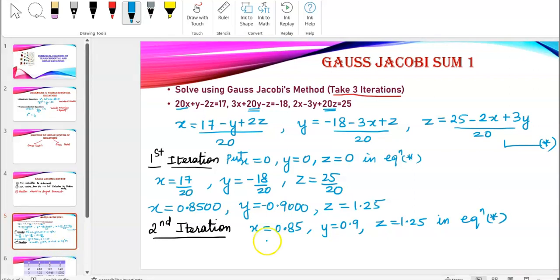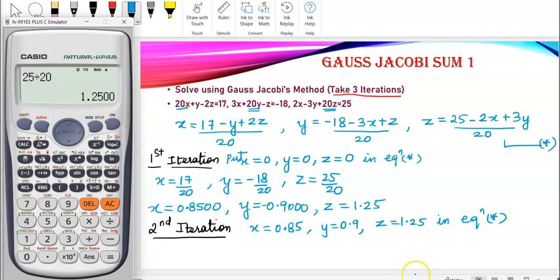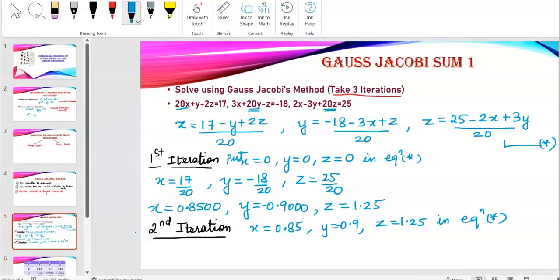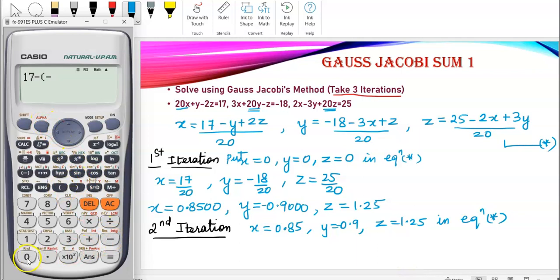So, let's do the calculation using calculator directly. My equation star x is equal to 17 minus y. Y is negative over here. So, negative 0.9 to be added. I'm putting it in a bracket. So, negative 0.9 plus 2 times z. Z value is 1.25. And I need an entire denominator 20. So, I'll keep these things in bracket. And now, whole upon 20. So, I get 1.02. x is 1.0200.